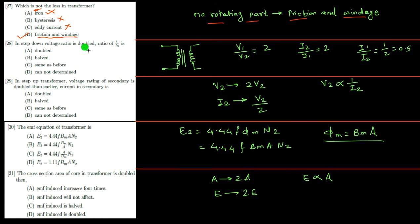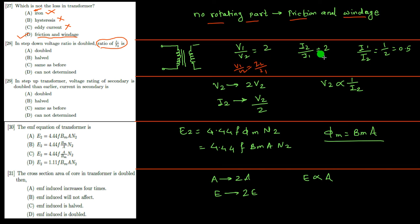In a step-down transformer, the voltage ratio is doubled. What is the ratio of I₁ to I₂? We know V₁/V₂ = I₂/I₁. If V₁/V₂ is doubled, then I₂/I₁ is also doubled. But I₁/I₂ is asked, so I₁/I₂ = 1/2 = 0.5, meaning it is half.